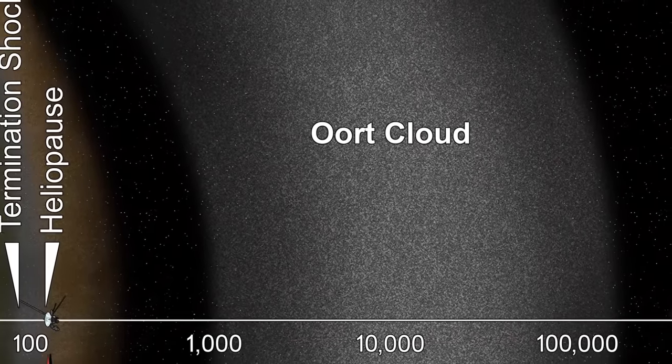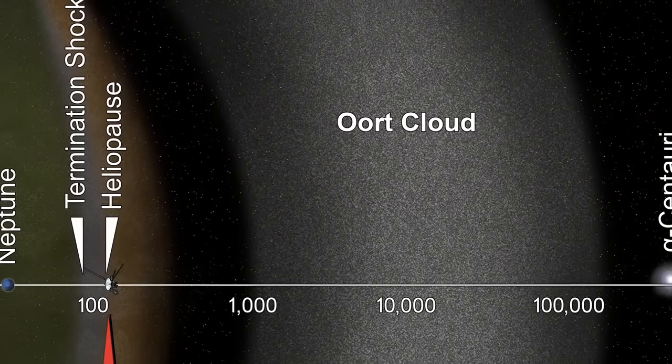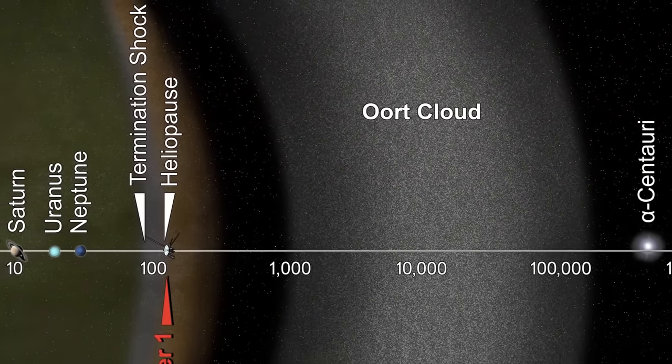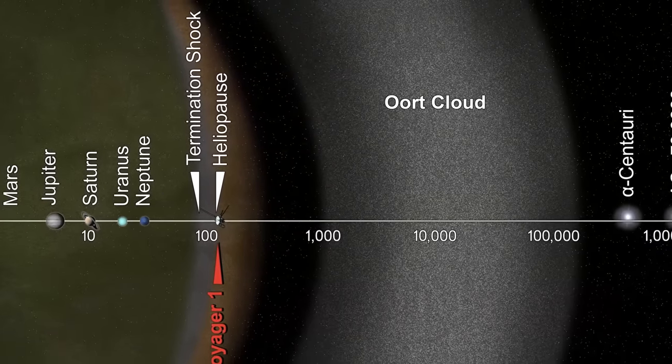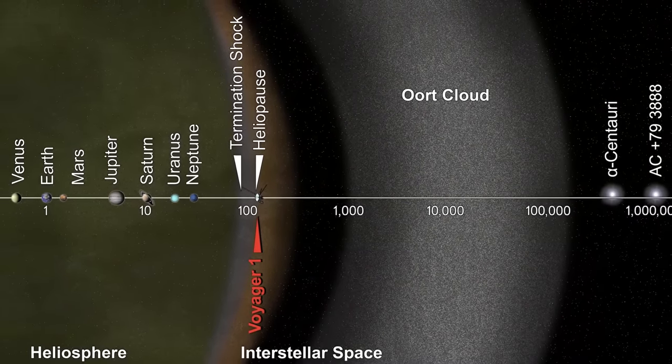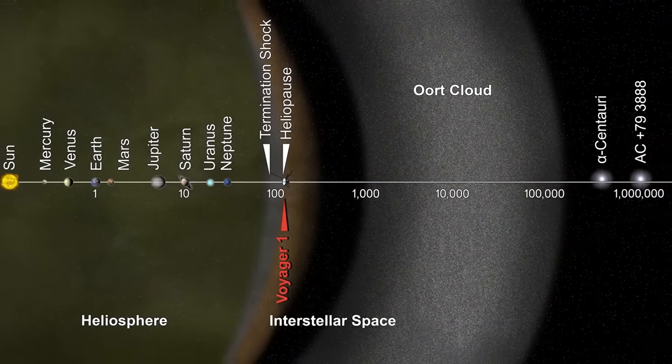At the very fringes of our solar system lies the Oort cloud, a vast theoretical sphere of icy objects. This distant cloud is thought to extend up to a staggering 100,000 astronomical units from the Sun. That's about 1.9 light-years, a distance so immense that it's on the cusp of interstellar space.